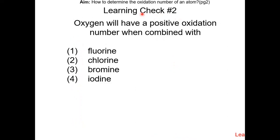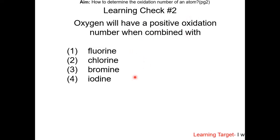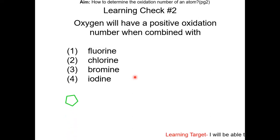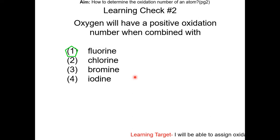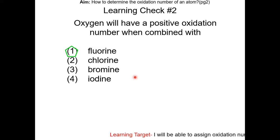Learning check number two: oxygen will have a positive oxidation number when combined with which element? The answer is choice one — fluorine, because fluorine is more electronegative than oxygen. Therefore, oxygen will have a positive oxidation number and fluorine will have a negative one.